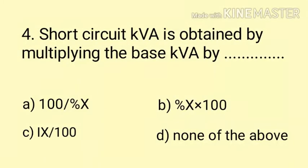Question number 4. Short circuit KVA is obtained by multiplying the base KVA by dash. Short circuit KVA ka formula hai: base KVA × 100 / percentage X. Here base KVA is given, and the multiplying factor is 100 by percentage X. Here the correct answer is Option A.